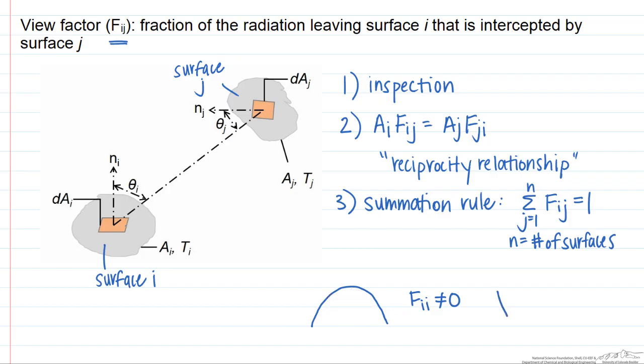However, if you have a plane or a convex surface, F sub ii is going to equal zero because it can't see itself.